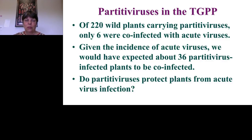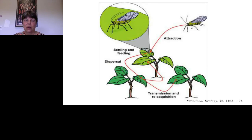In the Tallgrass Prairie, of 220 wild plants carrying Partitivirus, only six were co-infected with an acute virus — far fewer than expected given the incidence of acute viruses. We are currently asking whether Partitiviruses protect plants from acute virus infection. In the lab we have no problem infecting Partitivirus-carrying plants with acute viruses, so instead the protection may involve interactions with insect vectors. Recent work has shown that virus infection affects plant volatiles, increasing insect attraction and then producing anti-feeding compounds once the insect arrives, thereby enhancing virus transmission.